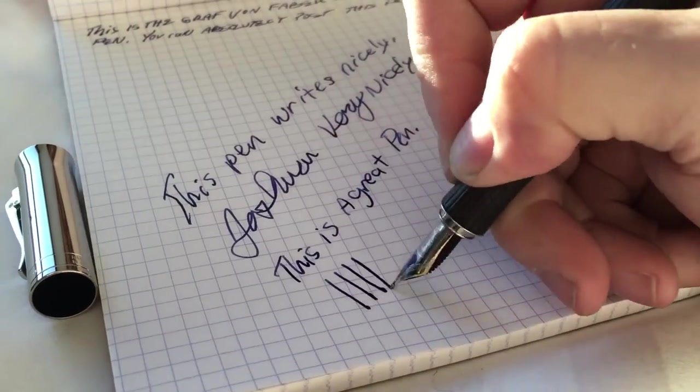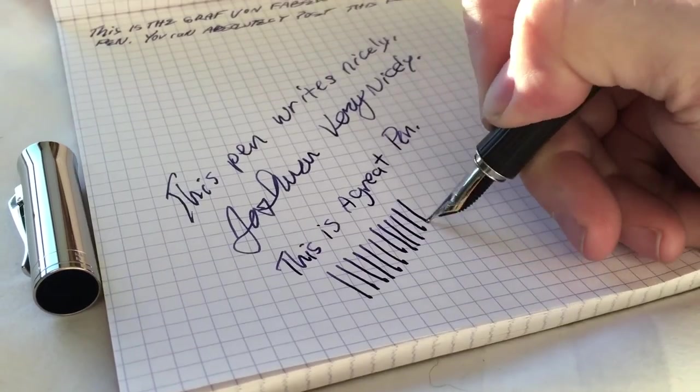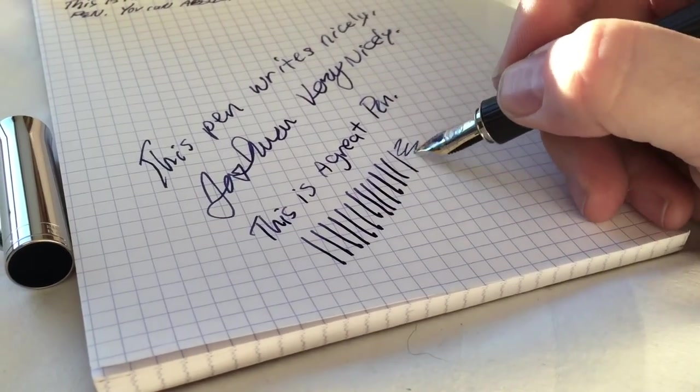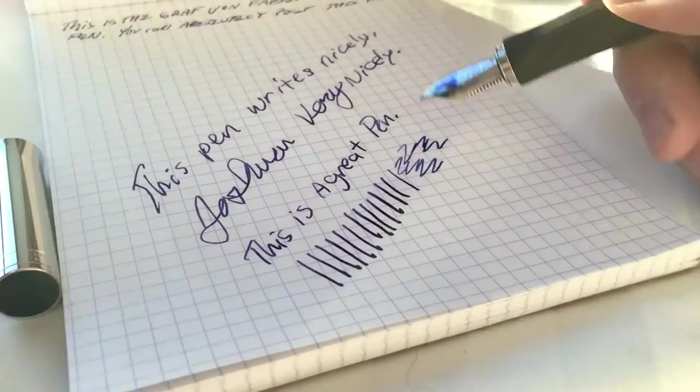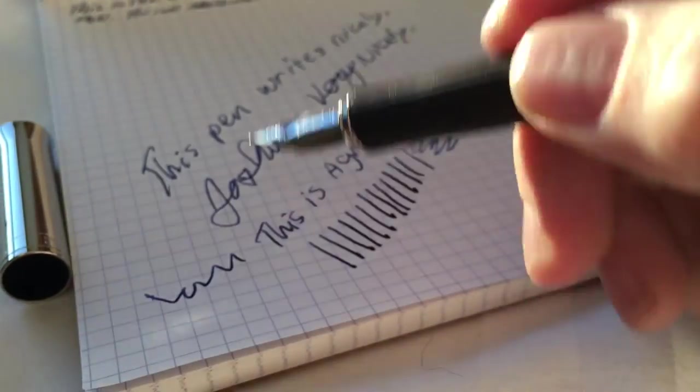There's some line variation there. As you push harder, you get a little bit thicker line. It's a fairly wet pen. I don't really feel like pushing my fingers through the ink right now, but if you can see in the video, it's a little bit on the wetter side.